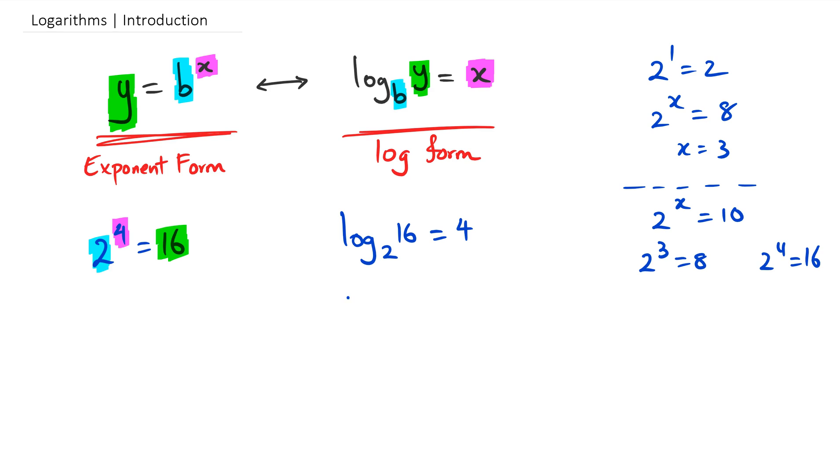Going backwards, if we have log base 3 of 81 equals 4, the base is 3, the answer is 81, and the power is 4. Rewriting it in exponent form, we would write this as 3 to the power of 4 equals 81, because three times three times three times three equals 81.